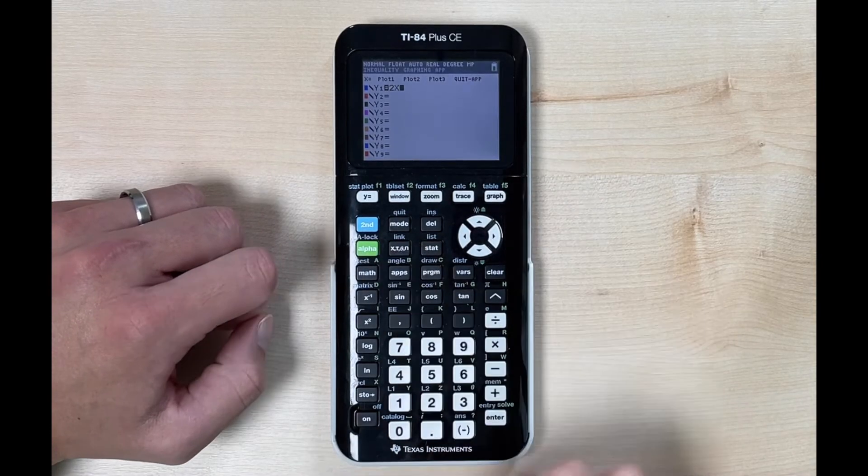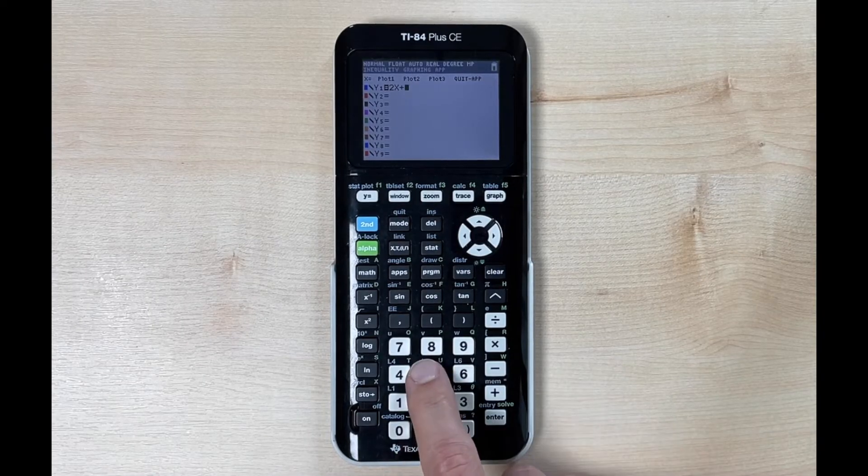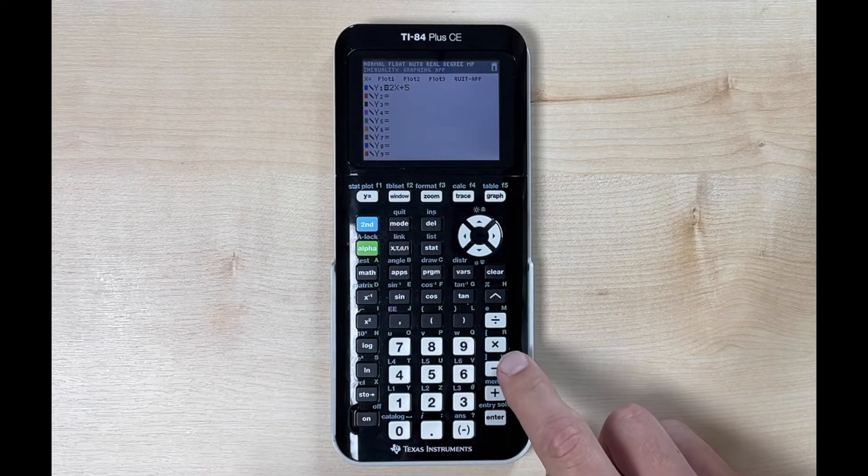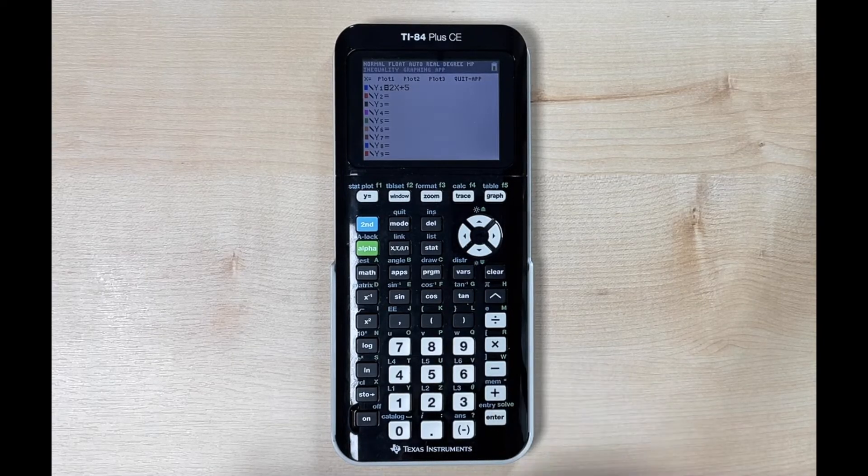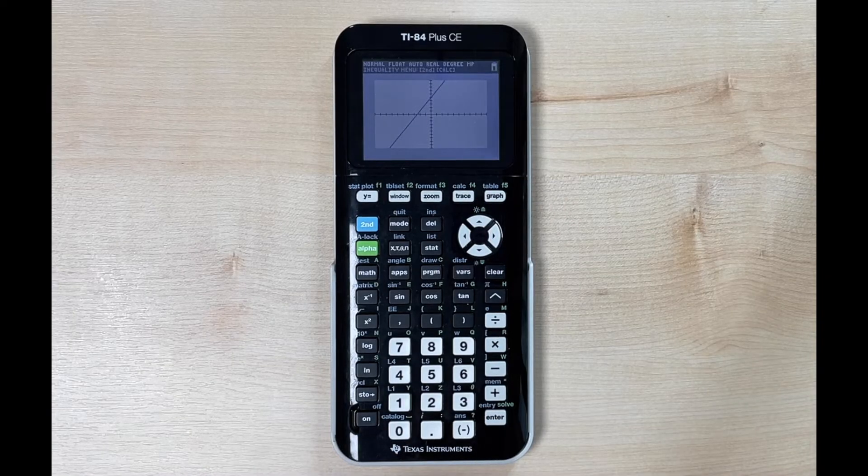If we click that right there that will give us the variable x that we need to use and plus 5. So any operation that we're doing plus or minus we can use our subtraction here and now we simply hit the graph button and the calculator will graph it for us.